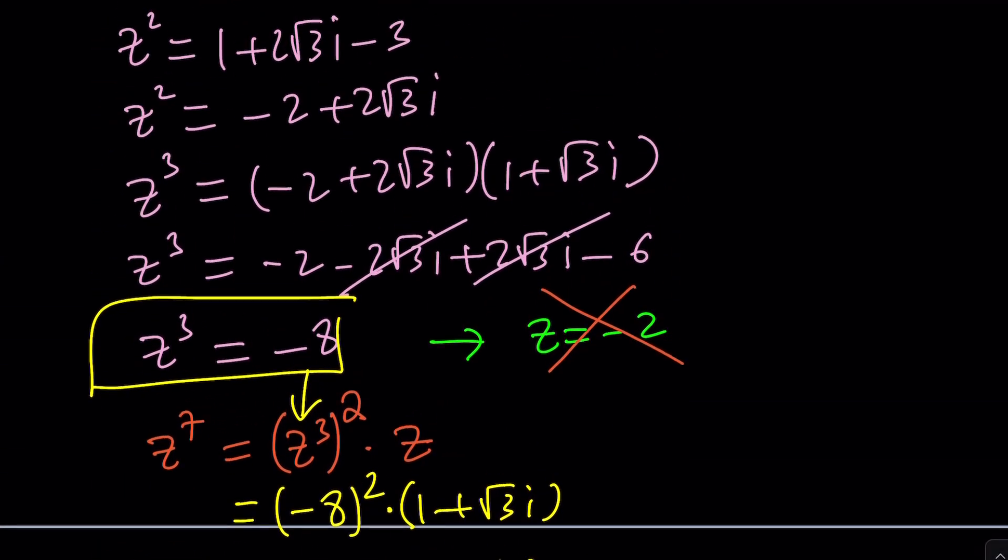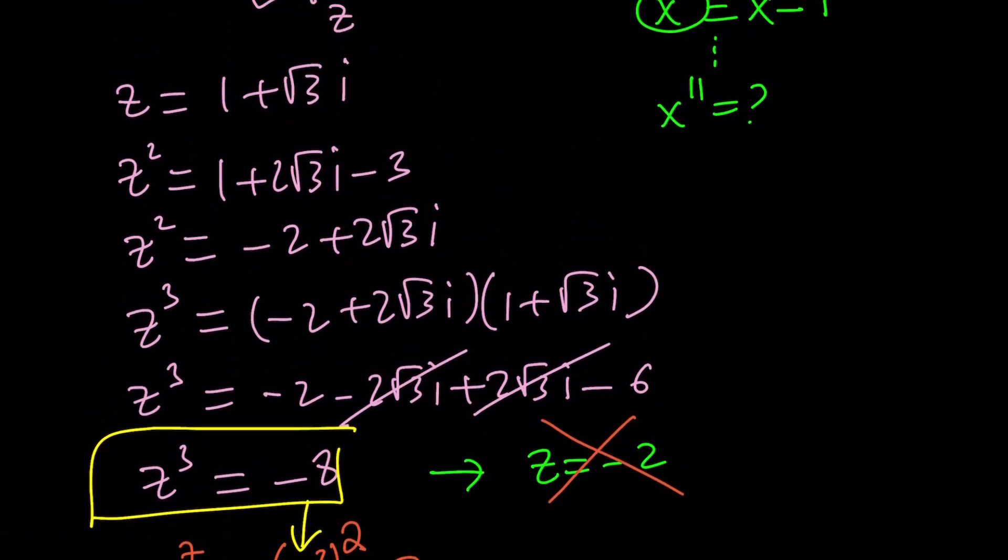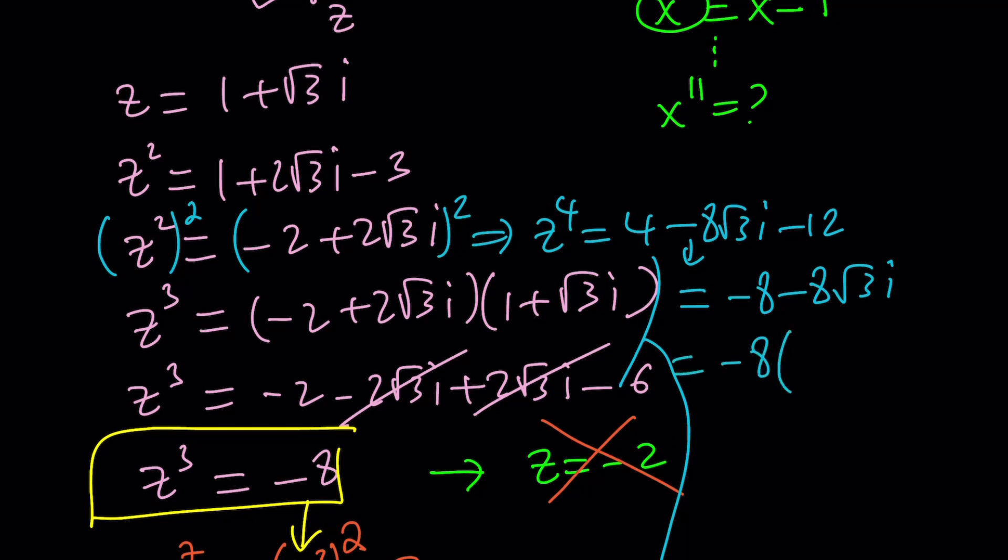By the way, if you did not go through Z cubed and just kept squaring it, for example, if you took this and square both sides, then you would be getting Z to the fourth power. And then that would give you, if you square this, you're going to get four and then minus eight root three I and then two root three I squared is going to be negative 12. So this would give you negative eight minus eight root three I.